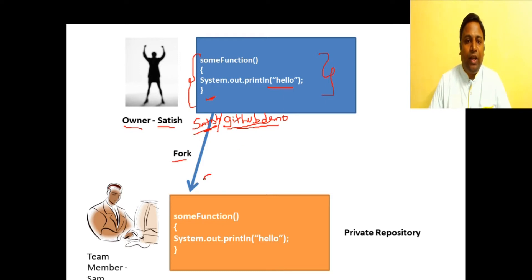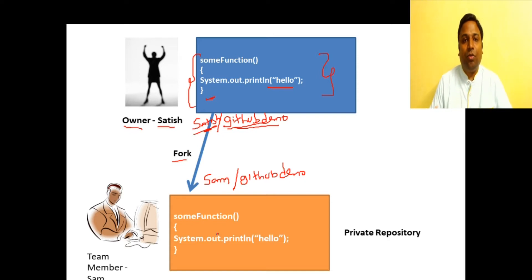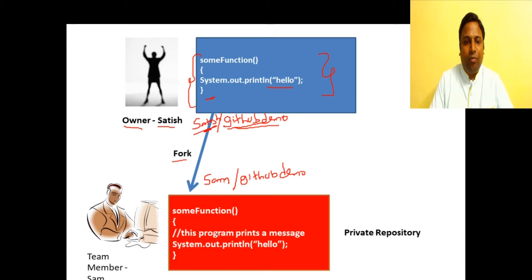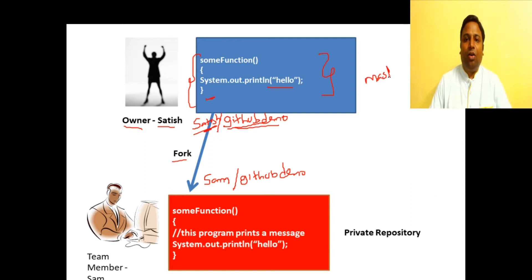The original repository profile is 'satish/github-demo'. When Sam issues a fork, a copy is made into his profile as 'sam/github-demo'. In this private copy Sam can go and add his code changes — for example, adding the comment line 'this program prints a message'. This change is still not merged with the main repository.